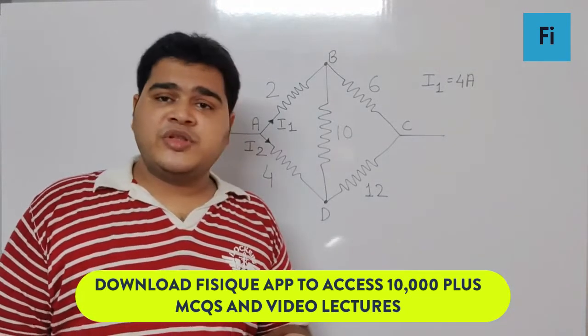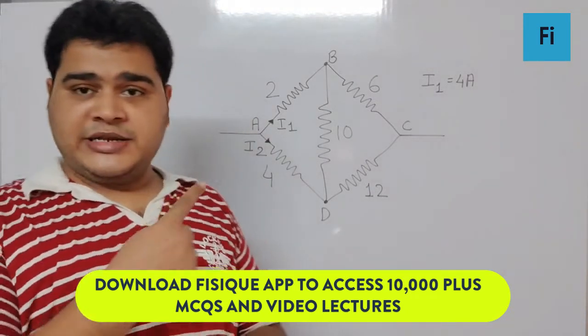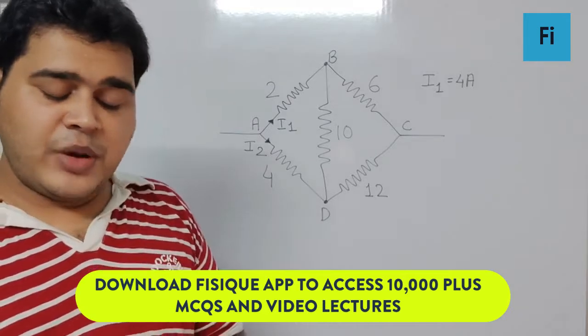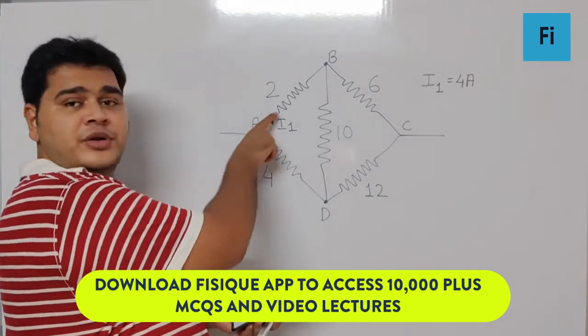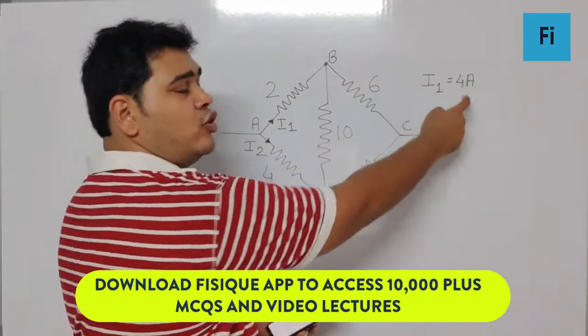The question says in the given circuit diagram, current I1 is equal to 4 amperes. You can see the I1 over here, this current is 4 amperes.